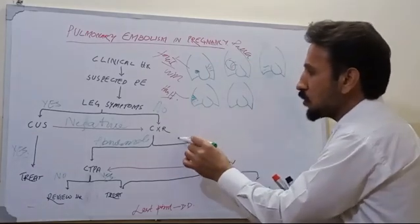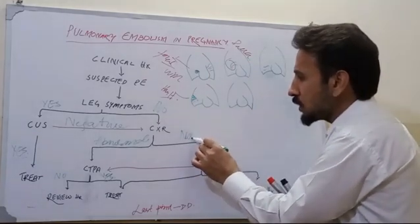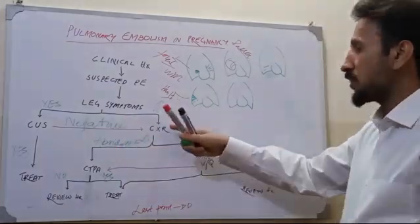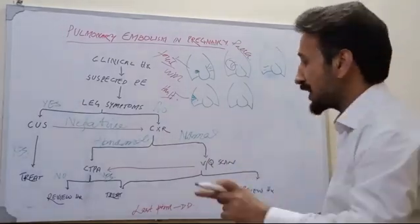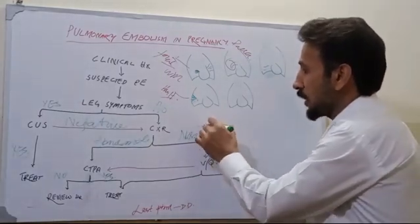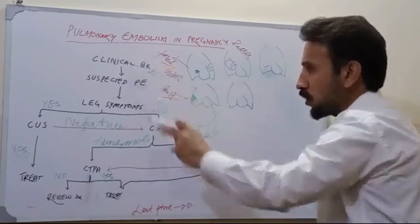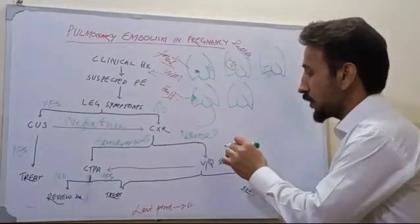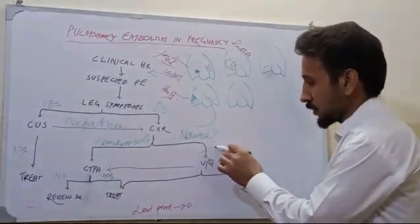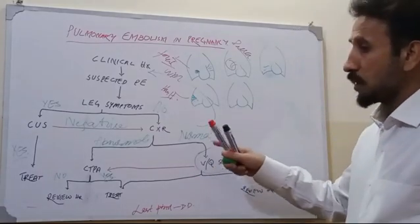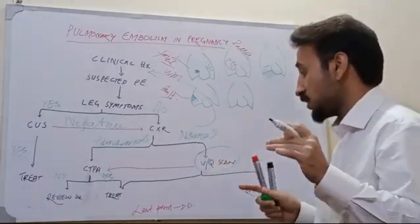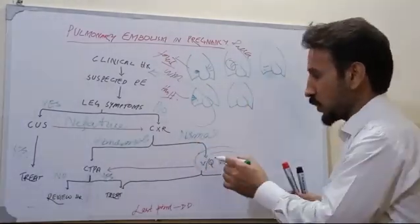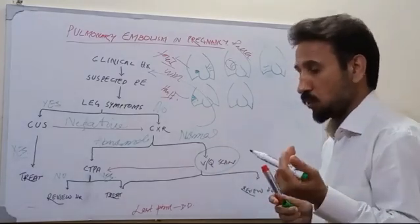If the patient's chest X-ray is normal but the clinical suspicion for pulmonary embolism is very high, the next step is to perform a ventilation-perfusion scan. This VQ scan should be done when the patient's history is very consistent with the diagnosis of pulmonary embolism but the chest X-ray is normal. The ventilation-perfusion scan may show two outcomes.